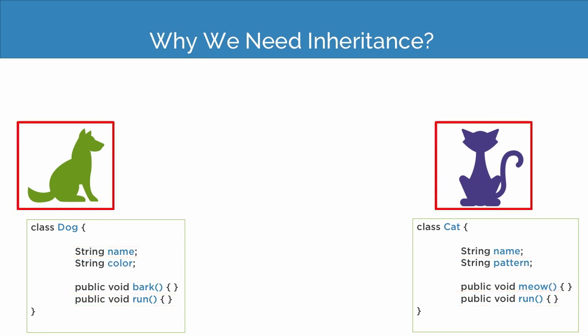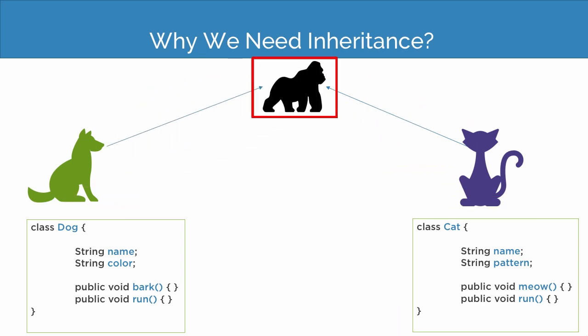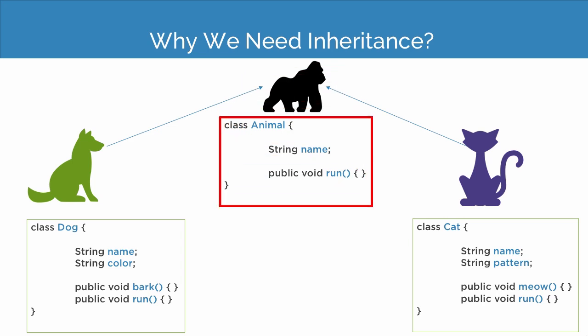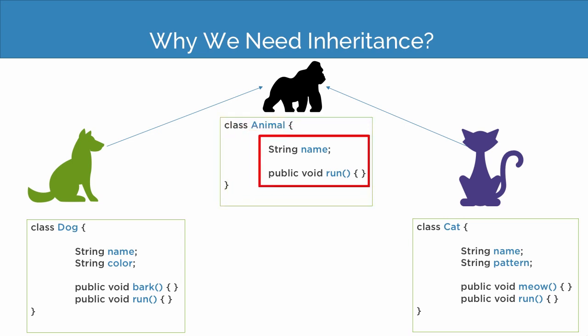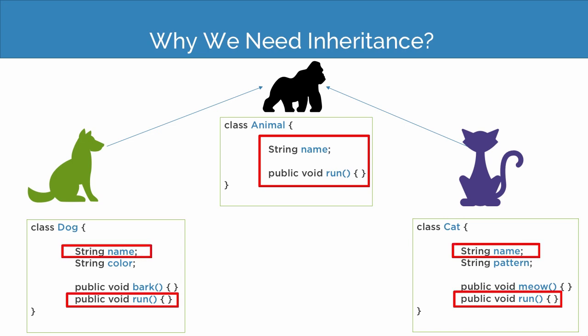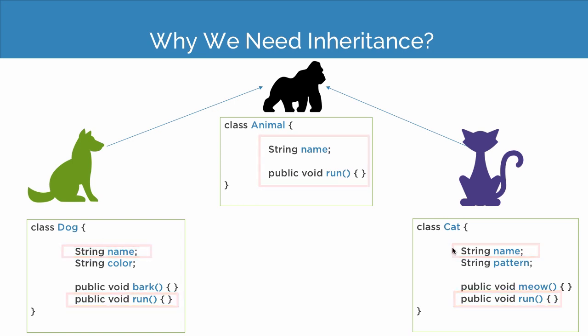So here, if you notice, in the case of dog and cat there is one thing in common — they both are animals. So why don't we create a class of animal? If we define the class of animal, then all animals have a name and all animals can run. Now this property and behavior is common in the case of dog and cat as well. So why don't we write our code in such a way that the class of dog and class of cat will get the property of animal? So here comes inheritance into the picture.